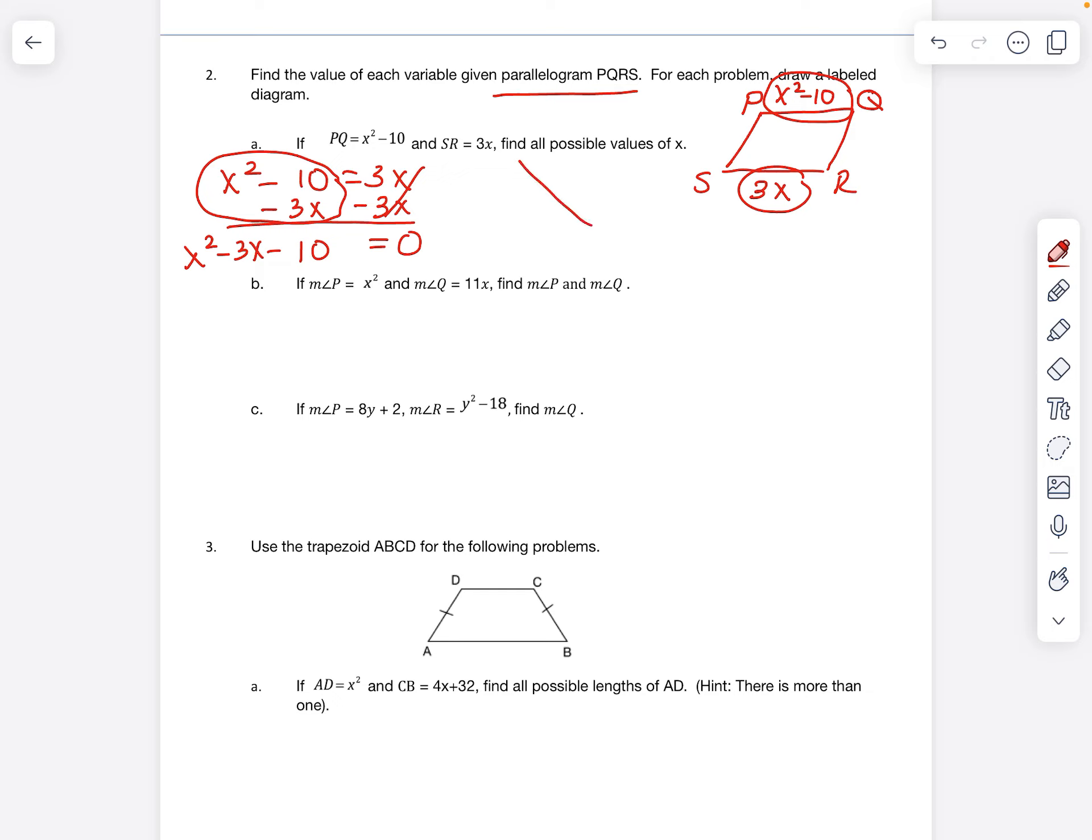Now we have to factor this. So remember, we have to look for two numbers that multiply to negative 10 but add up to negative 3. And one's going to be positive, one's negative. The only numbers that work are going to be negative 5 and positive 2. They multiply to negative 10, add up to negative 3. And remember, these numbers are going to be the numbers that we put in the parentheses here. So this is how it factors.